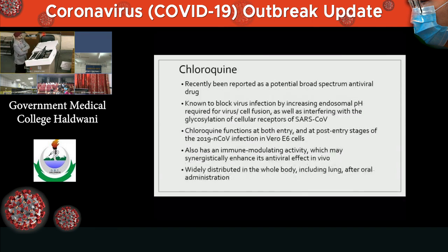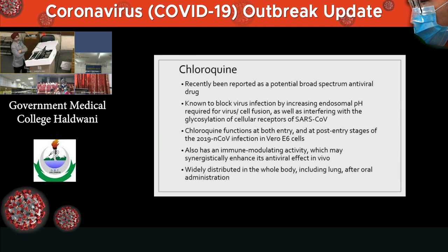The other drug is chloroquine, a potential broad-spectrum antiviral drug and well-known antimalarial agent. It blocks viral infection by increasing endosomal pH required for viral and cell fusion, as well as interfering with glycosylation of cellular receptors. Chloroquine functions at both the entry and post-entry stages of novel coronavirus infection. It also has immune-modulating activity, which may enhance its antiviral effects. Hydroxychloroquine is used as an anti-inflammatory agent in autoimmune diseases, and has also been used as an add-on anti-diabetic agent. Chloroquine is widely distributed throughout the body, including the lungs, after oral administration.